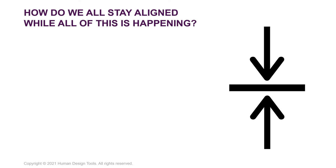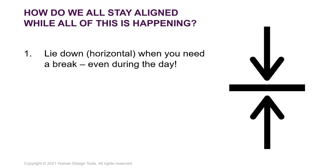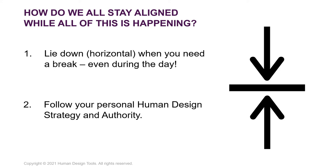So how do we all stay aligned while all this is happening? The neutrino stream is coming in, affecting us, bringing in all this information. The first thing you can do is lie down horizontal whenever you need a break — at night when you get home, or even during the middle of the day. You can also follow your personal human design strategy and authority, because this inspiration and information is coming in along with different conditioning, and it might get you excited to do many different things. But you need to follow your own strategy to find the right things for yourself.